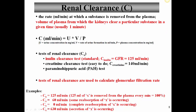Let's talk about an important concept called renal clearance. The definition is: the volume of plasma from which the kidneys clear a particular substance in a given time — usually based on one minute. We already know the glomerular filtration rate is 125 mL/min — the amount of filtrate formed by all nephrons in both kidneys every minute. If the amount of a substance in the urine equals the amount present in that 125 mL of filtrate, then that substance has been completely cleared from that volume.